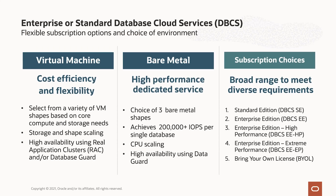For virtual machines, you can choose from a variety of VM shapes based on the amount of cores and storage that you need. Both storage and shape can scale without any problems. For applications that need higher availability, we have real application clusters deployment, and for even higher availability requirements you can replicate data using our DataGuard or ActiveDataGuard technologies. We also have a bare metal deployment choice for high performance computing — you can choose between three bare metal shapes if you need upwards of 200,000 IOPS per single database. All of these shapes support CPU scaling and high availability can be achieved with DataGuard.